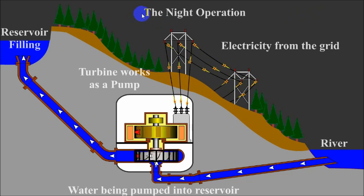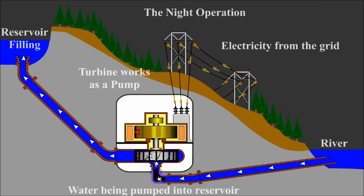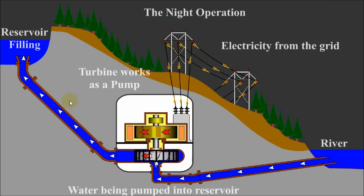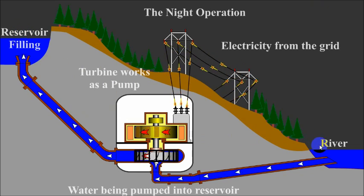As you can see in this animation representing the night operation, the water is being pumped to the high elevation lake by a Francis turbine. The electricity is pulled from the grid to power the Francis turbine, which is working as a pump. Notice that the water level in the reservoir is rising. Note also that the Francis turbine is located below the river surface level, which makes the pumping operation possible. The water is pumped uphill to generate electricity from it later.